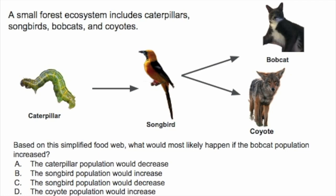But not so fast — why is D wrong? This is an important concept. At the top of our hierarchy in this small forest ecosystem, we have bobcats and coyotes at the same level, meaning they compete for food. If there are more bobcats, the coyotes have to compete more for food. So more bobcats means probably fewer coyotes, because more of them will starve. The coyote population would decrease. The answer is C: the songbird population would decrease.